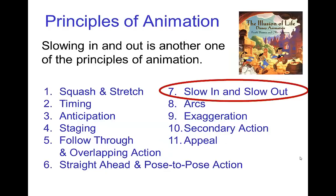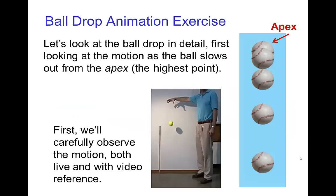Slowing in and slowing out is another one of the principles of animation, and the ball drop exercise is a great example of looking at the motion of something that's slowing out. You start at the apex, and as the ball is falling, it's gaining speed, so it's slowing out from the apex.